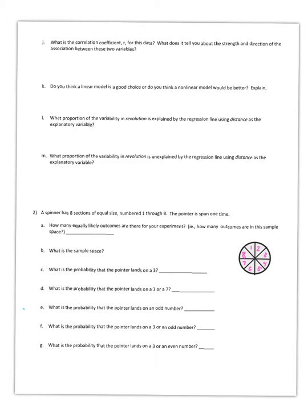A spinner has eight sections of equal size, numbered one through eight. The pointer is spun one time. I drew a picture of this over here — it might not be perfect, but just to give us an idea of the spinner. How many equally likely outcomes are there for your experiment? There are eight, because it's broken into eight spaces.